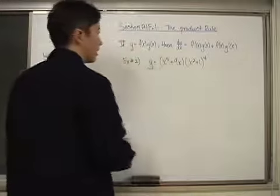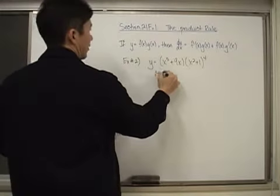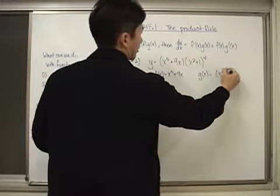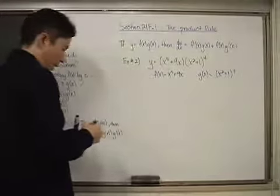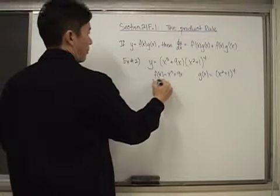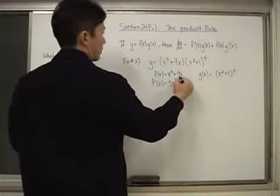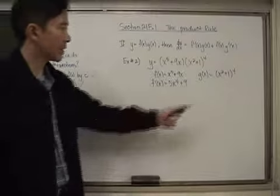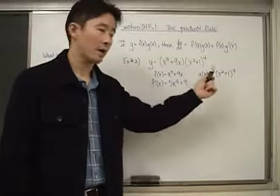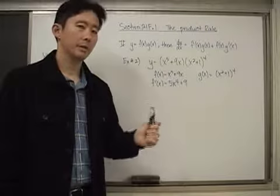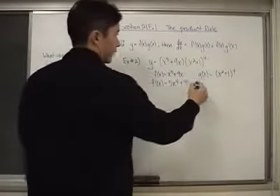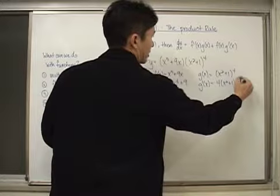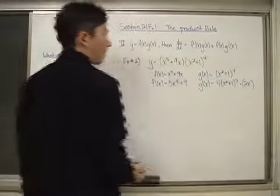We identify f of x as x to the fifth plus nine x, and g of x as (x squared plus one) to the fourth power. Then f prime of x is five x to the fourth plus nine. For g of x, we have to be careful — it's a composition of two functions, so we need to use the chain rule. Applying the chain rule, g prime of x equals four times (x squared plus one) to the third power times two x.